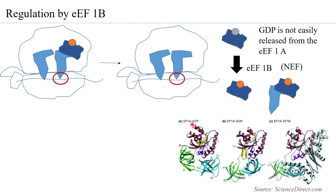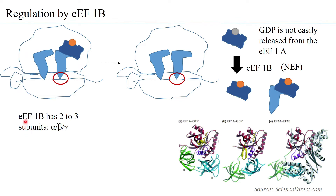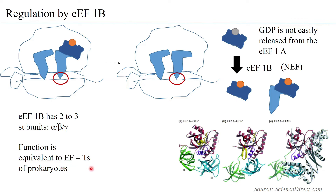When EF1A is bound to GTP, it has a conformation that allows it to interact with the tRNA and ribosome; when bound to GDP, the conformation changes such that it has no affinity to bind either the tRNA or the ribosome and is released. EF1B, shown in gray, binds to EF1A and replaces the GDP with GTP. EF1B has two to three subunits — alpha, beta, and gamma — and its function is equivalent to EF-Ts of the prokaryotes.